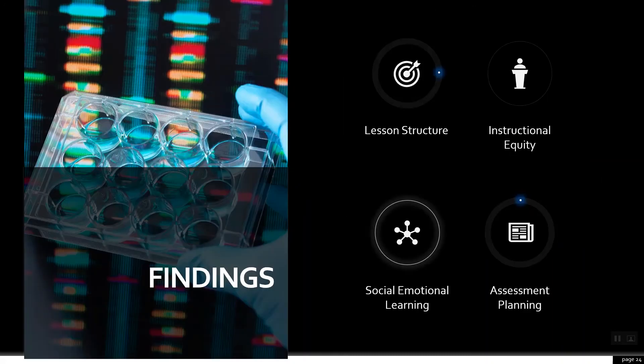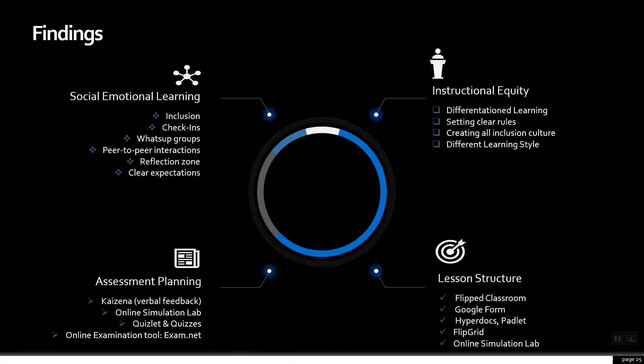Summing up the grand findings: For social-emotional learning — inclusion, check-ins, WhatsApp groups, peer-to-peer interactions, reflections, and clear expectations. For instructional equity — differentiated learning, differentiated by outcomes, differentiated by task, setting clear rules, creating an all-inclusive culture, and addressing different learning styles.